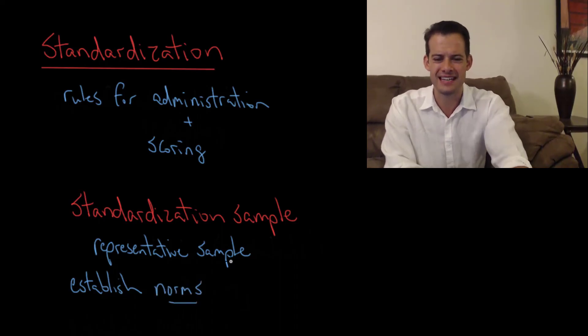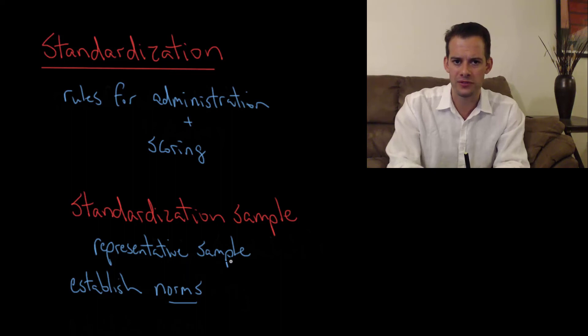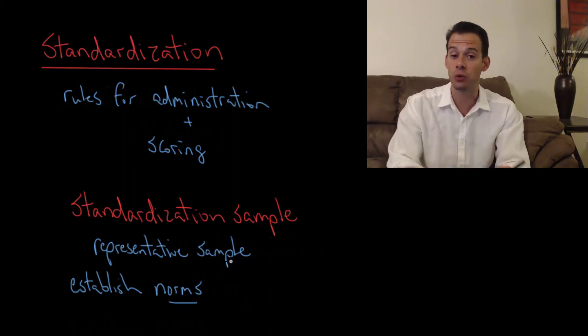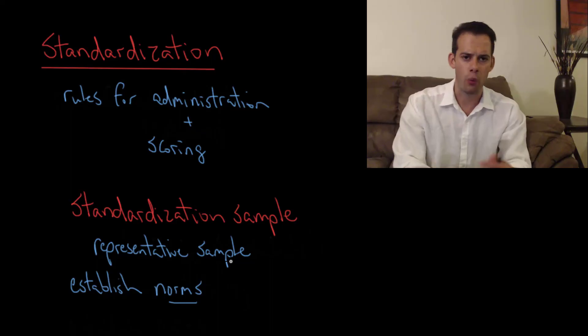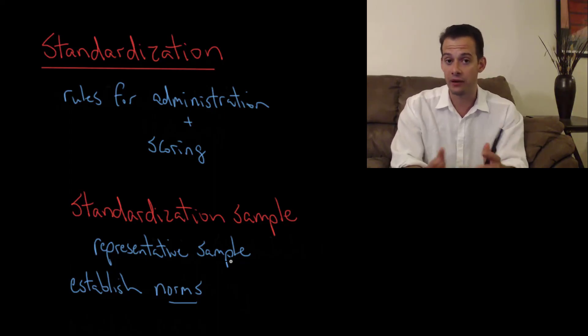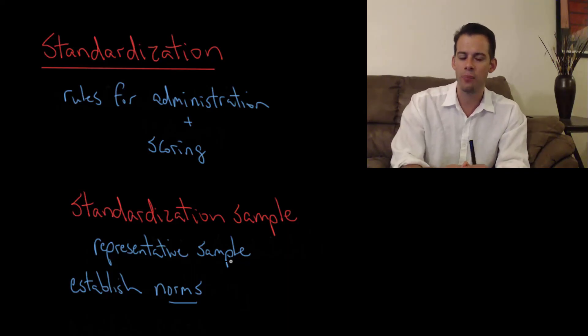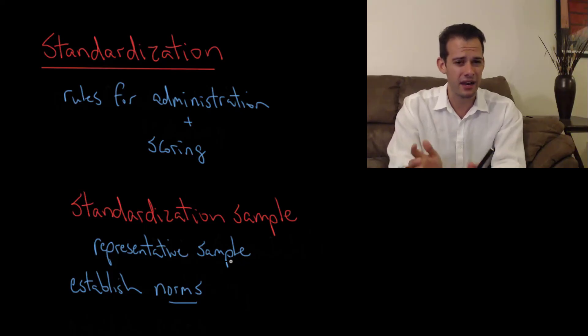So how does the SAT establish norms for the examinations? Well what they do is they have a very representative sample. In the case of the SAT it's actual high school students taking the SAT. So what I mean by that is when you take the SAT there are some questions on there that aren't actually going to count towards your score. They're experimental questions. And they're going to be graded so the examiners are going to look and see what percentage of students were able to answer this question. What percentage of students were able to answer these questions on this reading passage? Maybe this isn't an appropriate reading passage. How does the difficulty compare to all of the other SATs that we've given?